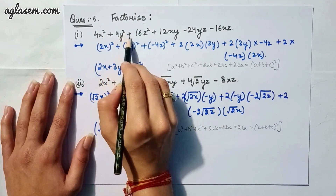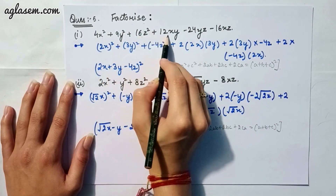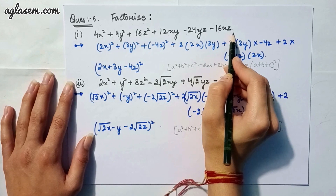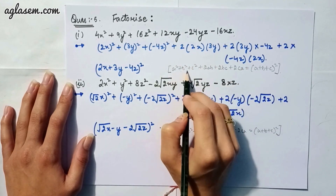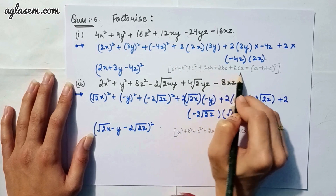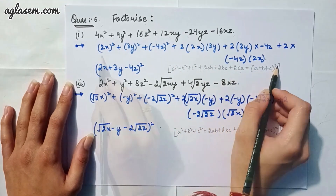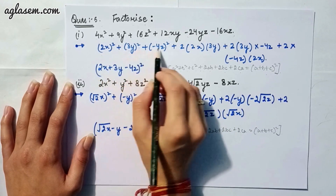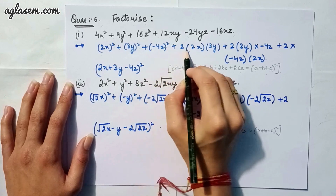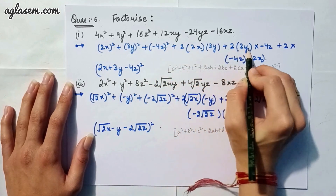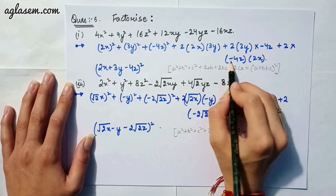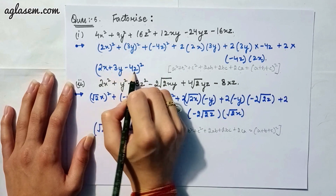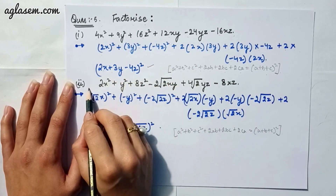Moving to our fifth question: factorize 4x² + 9y² + 16z² + 12xy − 24yz − 16xz. Applying the identity (a + b + c)² = a² + b² + c² + 2ab + 2bc + 2ca, we identify a = 2x, b = 3y, c = −4z. The answer is (2x + 3y − 4z)².